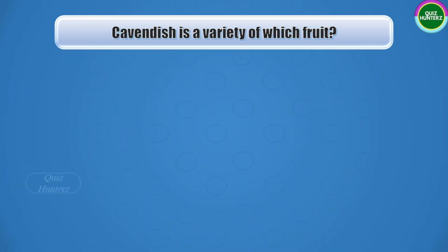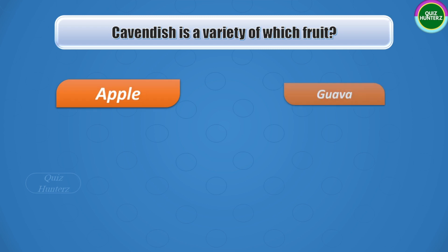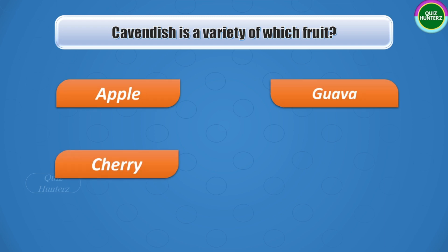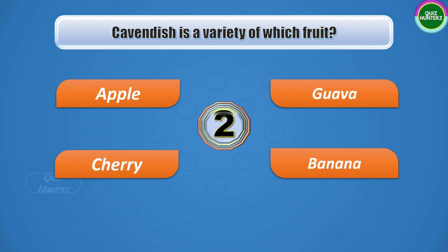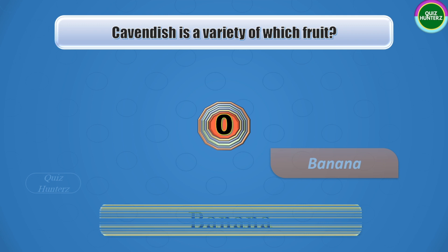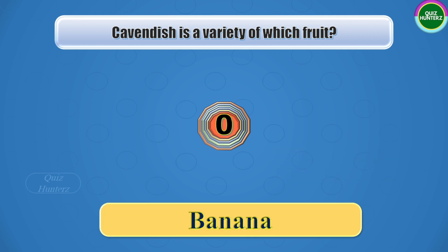Next question: Cavendish is a variety of which fruit? The options are apple, guava, cherry, or banana. Your time starts now. And the correct answer is banana.